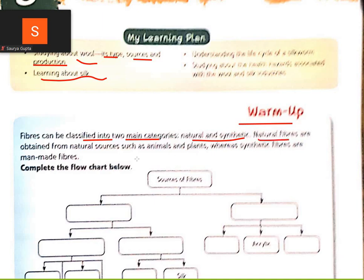Natural fibers are obtained from natural sources — that we already studied in class 6. Natural fibers can be obtained from animals and plants. Synthetic fibers are man-made fibers.